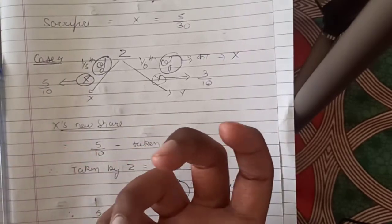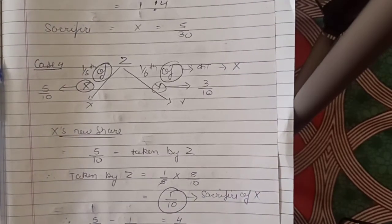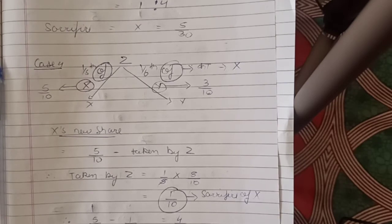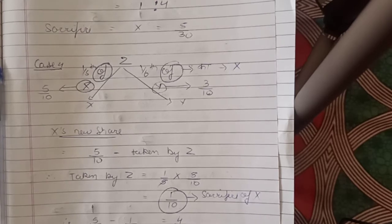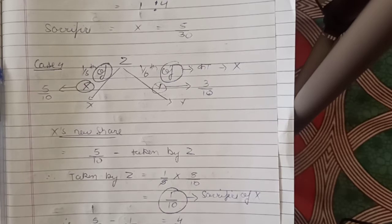You must have studied this in basic maths. For example, if your brother has 5 chocolates and you take half of your brother's chocolates, you multiply: 5 × 1/2 = 2.5. So 'of' means multiply.